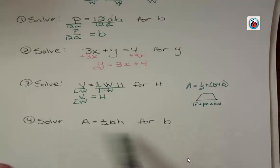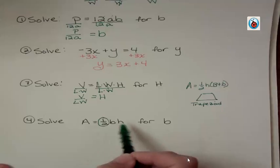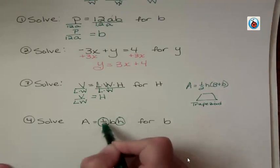Okay. Solve this for B. That means get B by itself. You have a couple of options here. But what should be obvious to you is that you need to get rid of the 1 half and you need to get rid of the H. So I'm going to get rid of the 1 half first. And I'm going to do that by multiplying by the reciprocal.